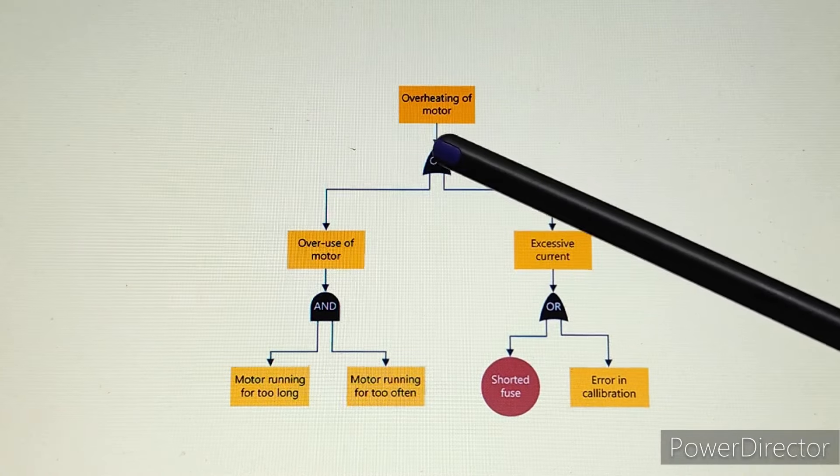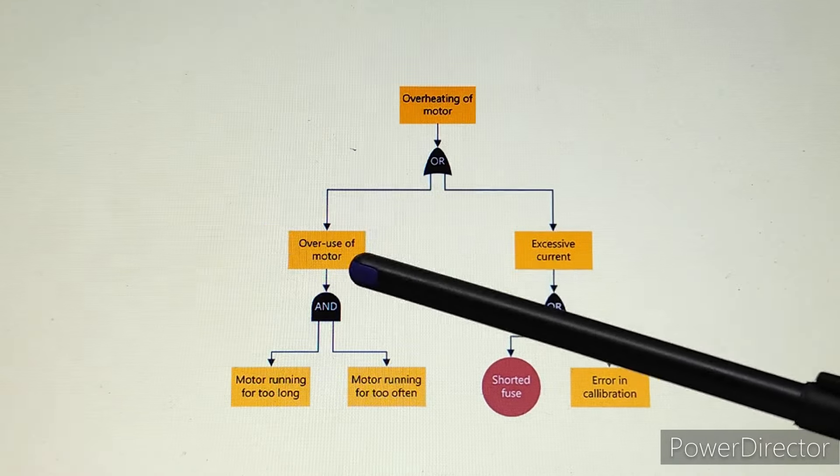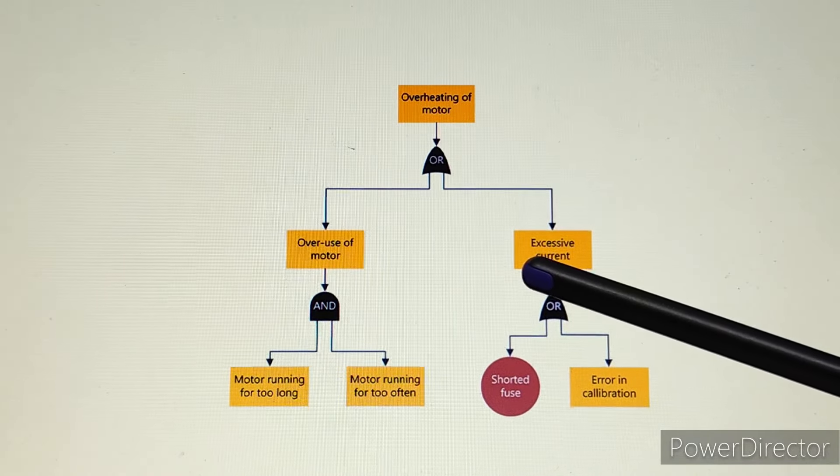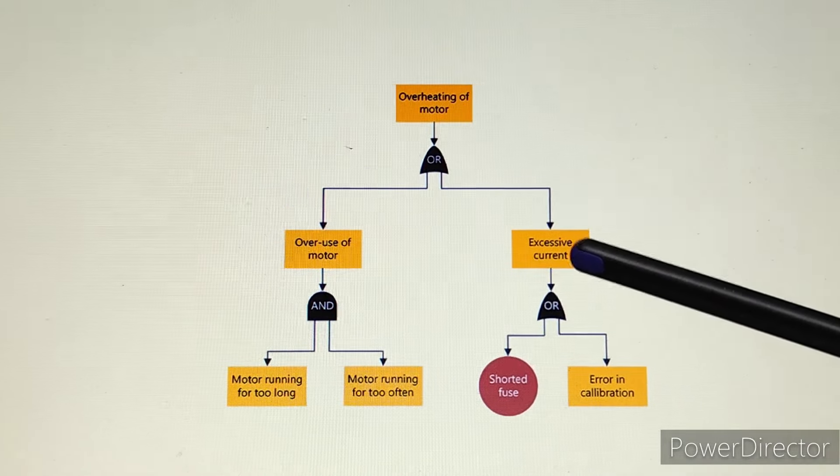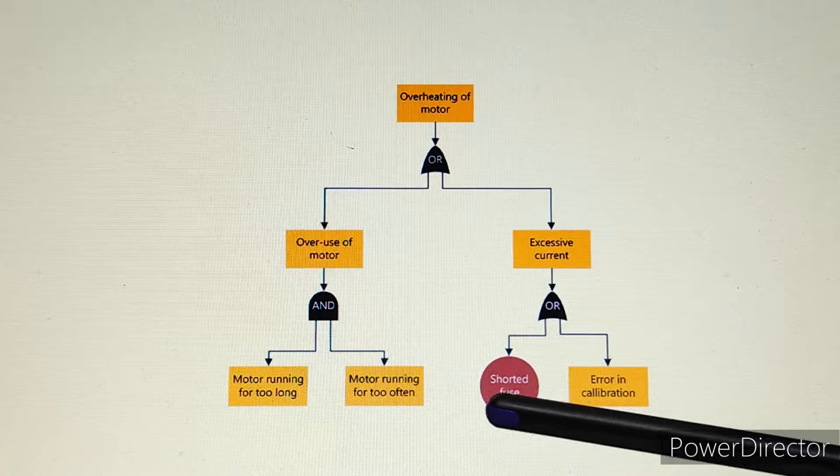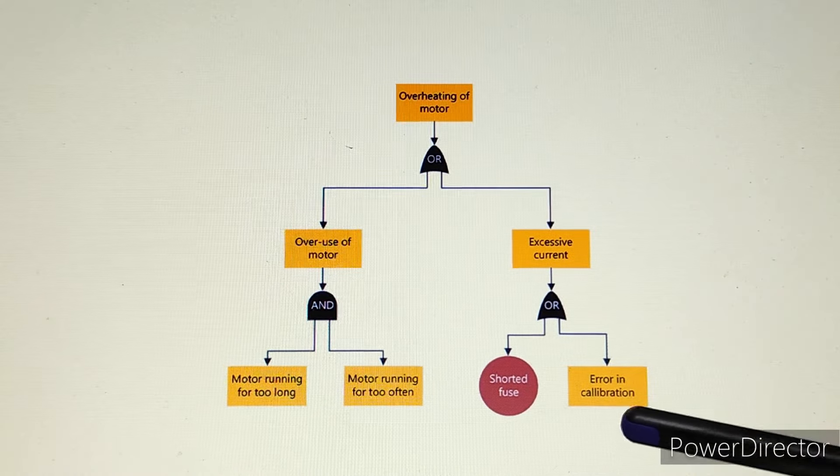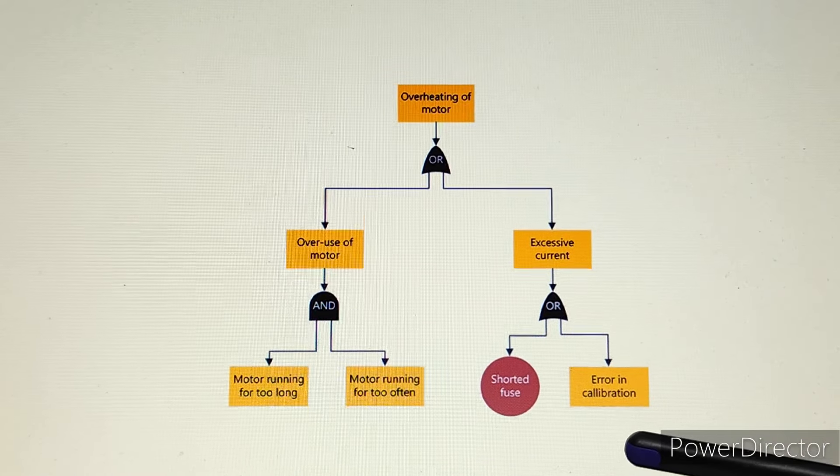And here our OR gate is overheating, so there will be one cause. We have understood excessive current. Now, excessive current can be fuse short and there is error in calibration.